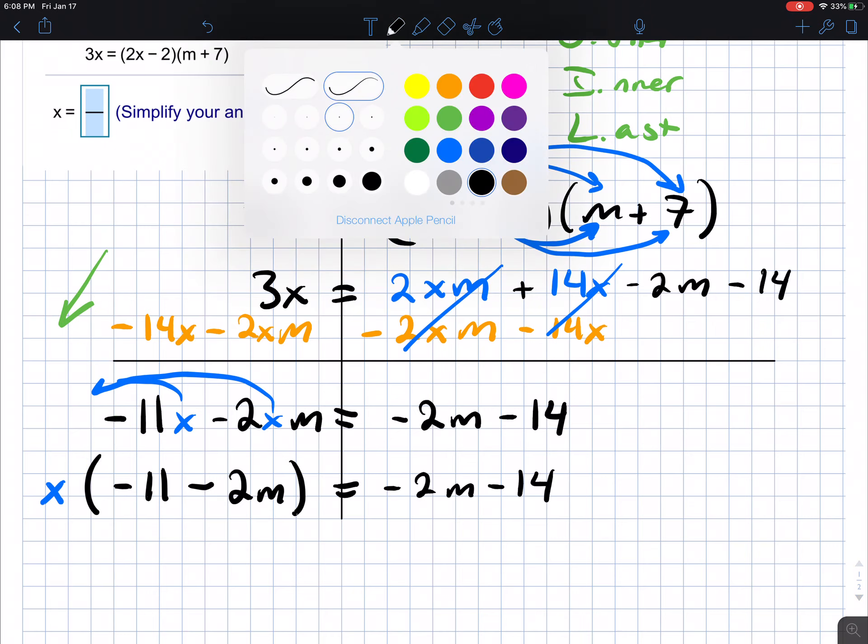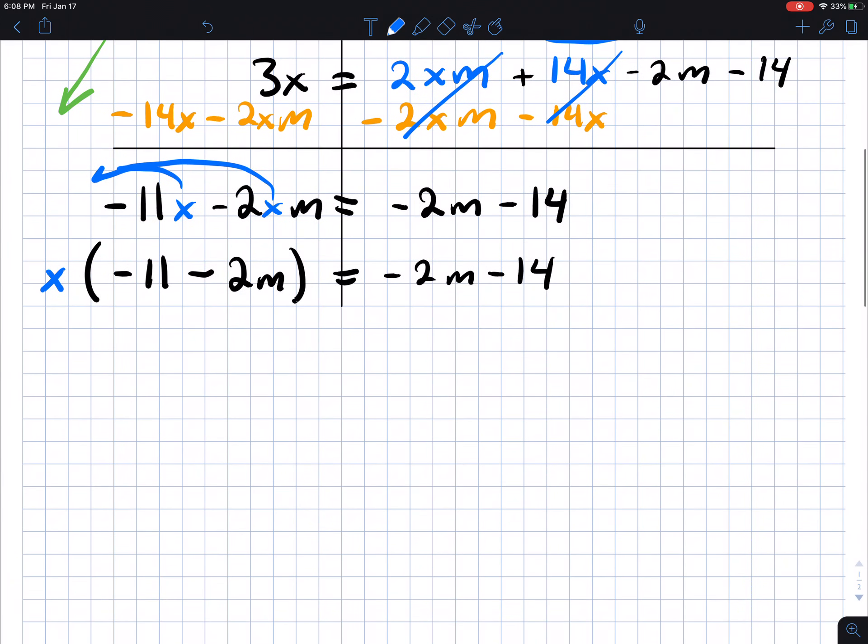So long story short, we're going to divide both sides by a negative 11 minus 2m. Something divided by itself, they canceled, it divides to become one, very zen-like.